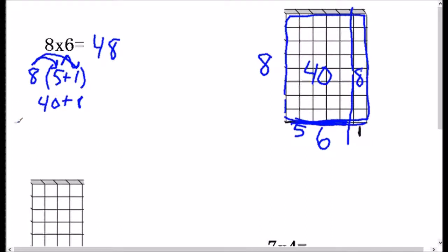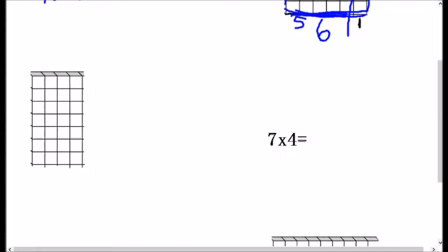Okay, let's look at another example. Here we have 7 times 4. This is 7. One thing I can do is I can break up the 7. I can turn it into 5 plus 2. So this is 5, and this is 2.